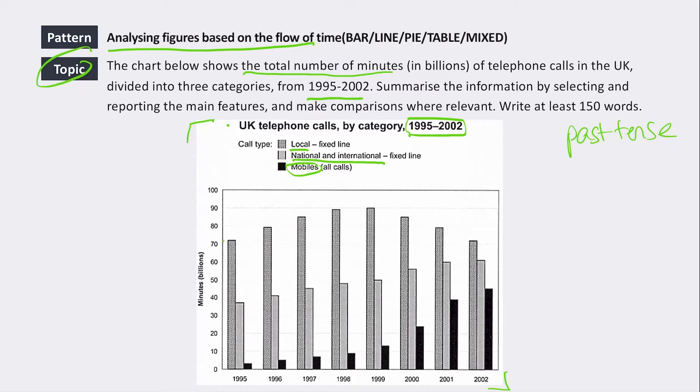Just by taking a quick scan of this graph, we can see that local calls gradually went up and then gradually went down. Then we've got national and international calls slowly went up, and then we've got mobiles very quickly had a much steeper increase than the others.